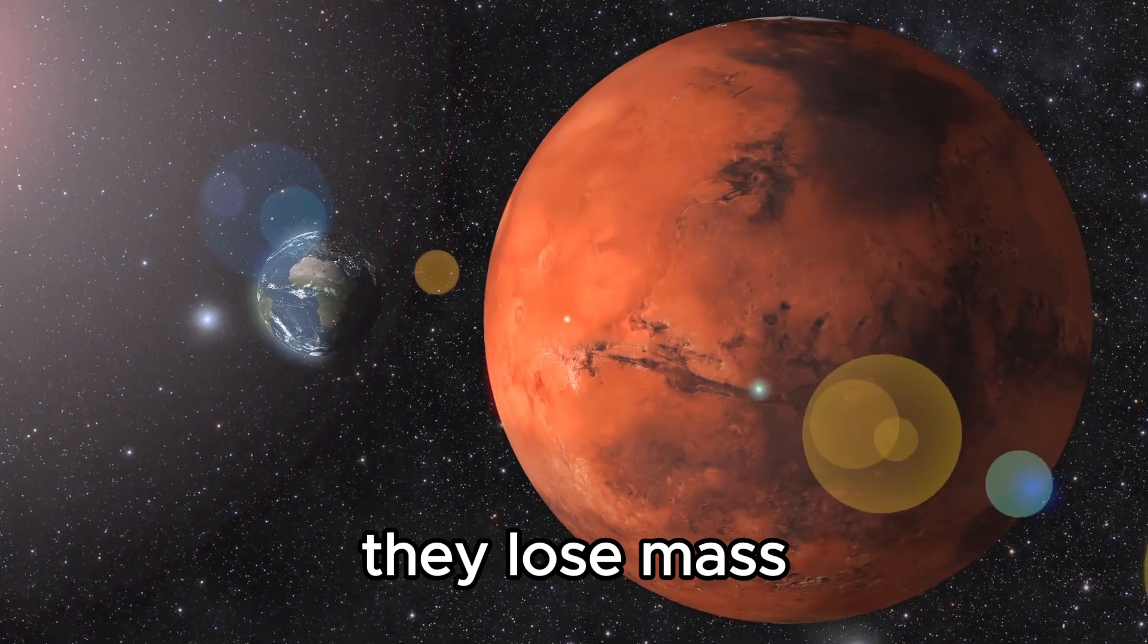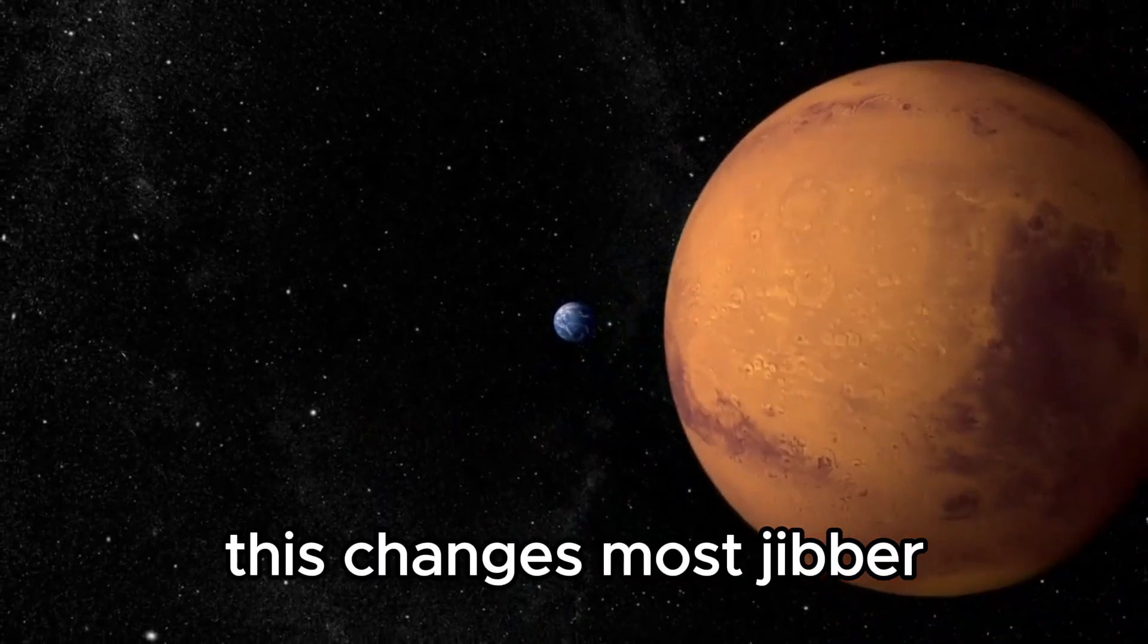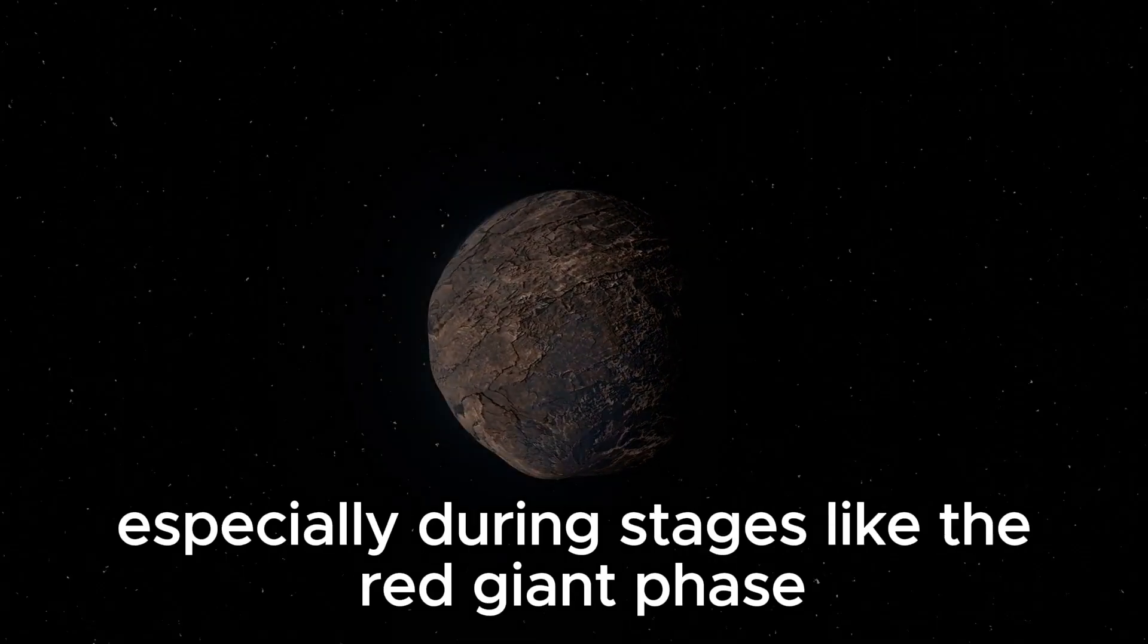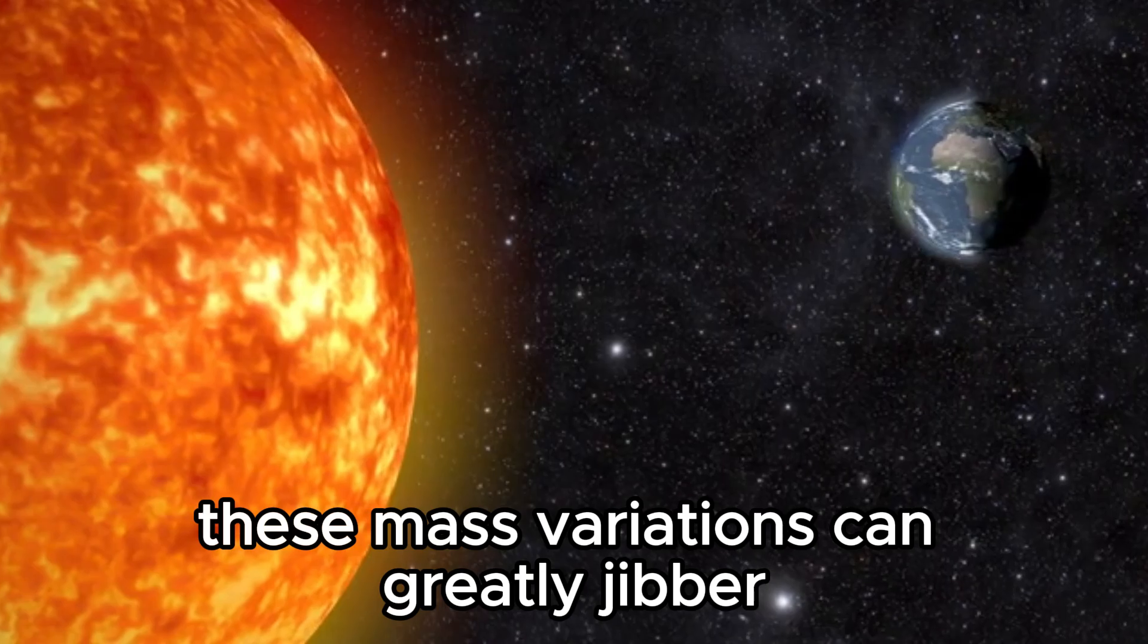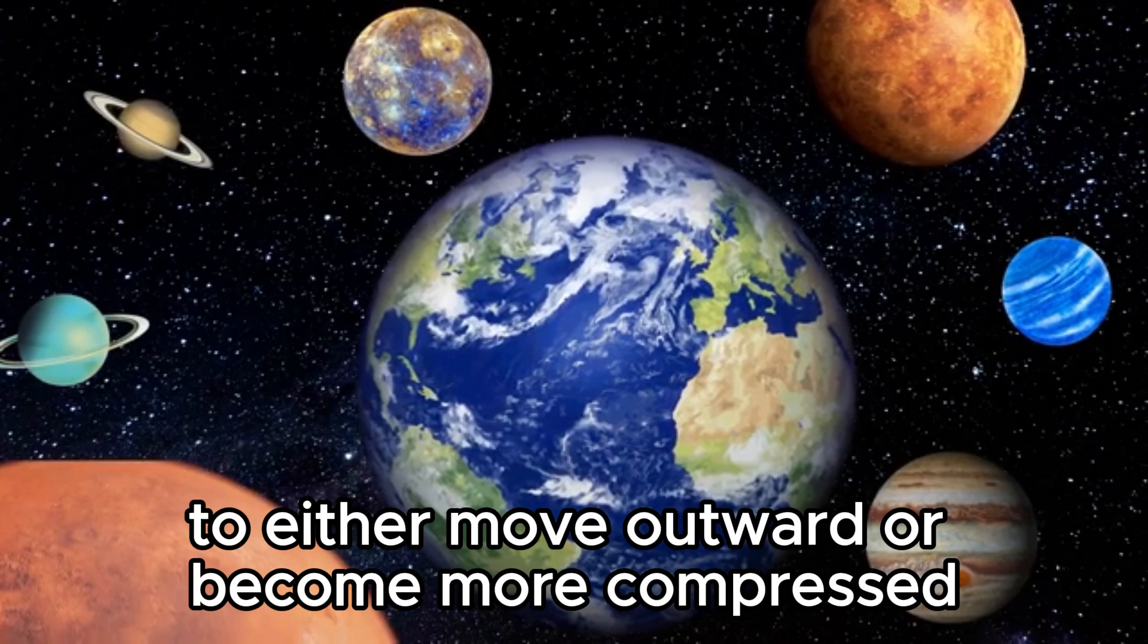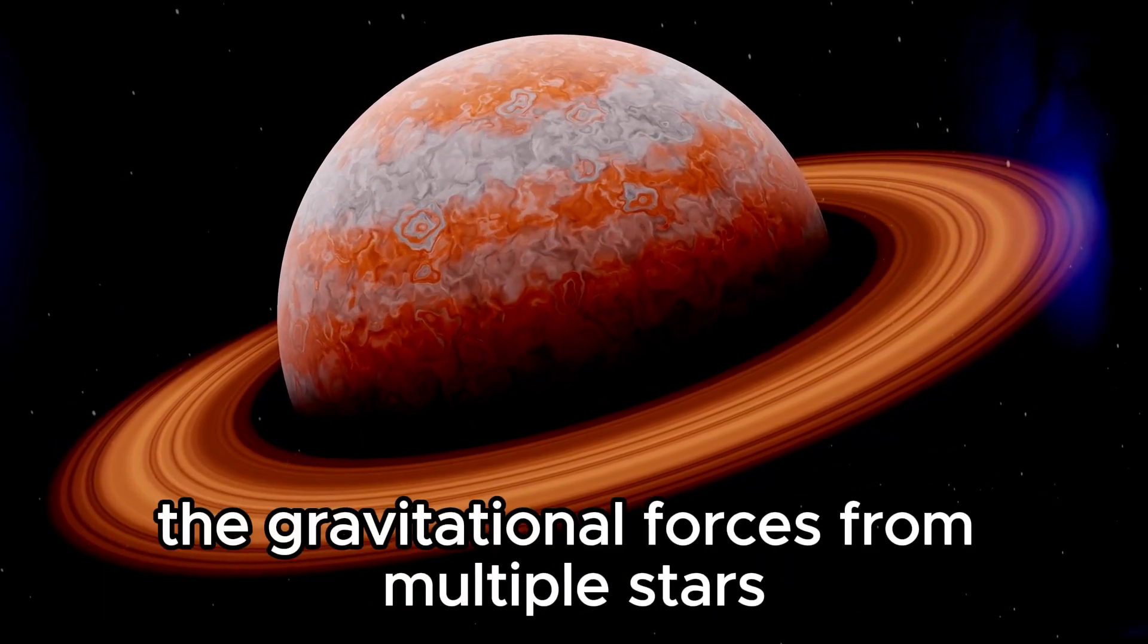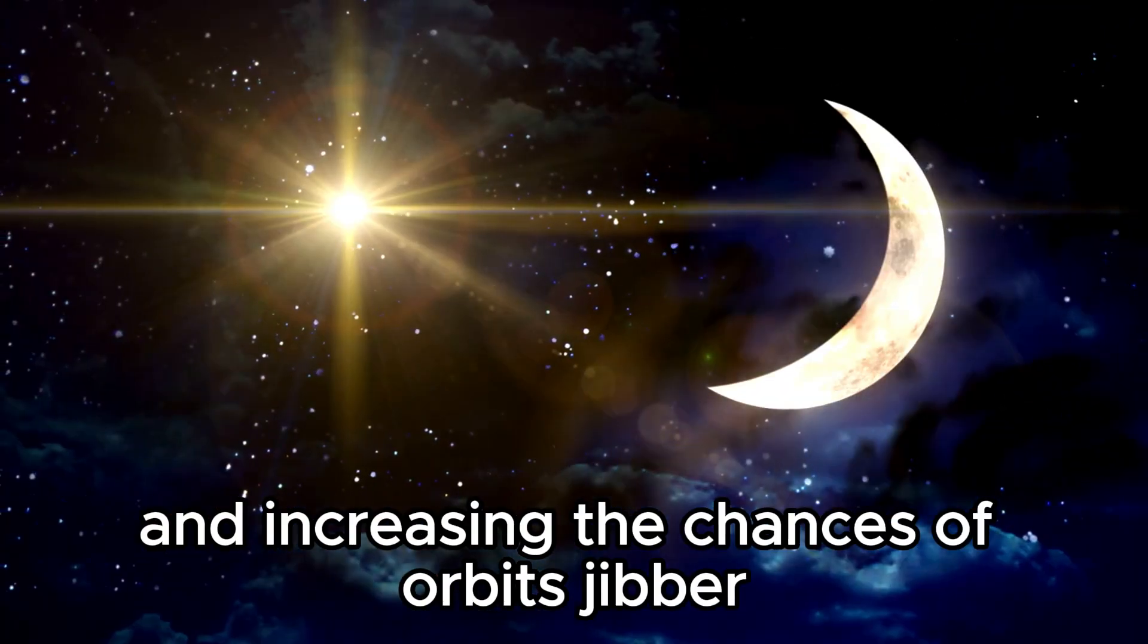As stars change over time, they lose mass, which can affect the paths of planets around them, sometimes causing them to widen and potentially destabilize. This changes most dramatically in systems where stars are nearing the end of their life cycle. As a star ages and uses up its nuclear fuel, it undergoes significant mass changes, especially during stages like the red giant phase or when it releases material in a planetary nebula. These mass variations can greatly affect the gravitational balance of the system, causing nearby planets' orbits to either move outward or become more compressed. This phenomenon is more common in systems with multiple stars, where complex gravitational interactions can lead to unstable orbits. In such systems, the gravitational forces from multiple stars can interact unpredictably, making orbital shifts more likely and increasing the chances of orbits crossing.